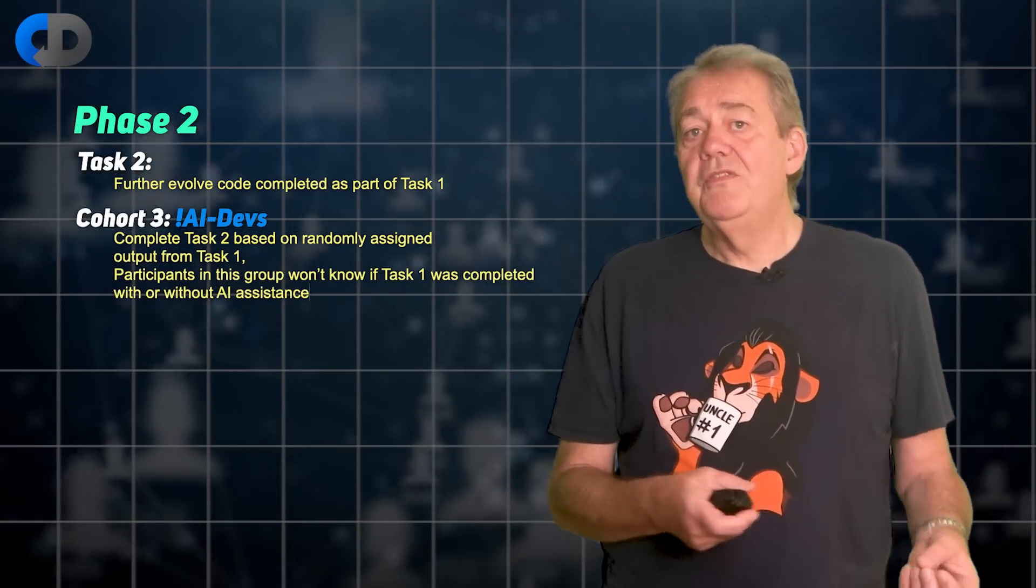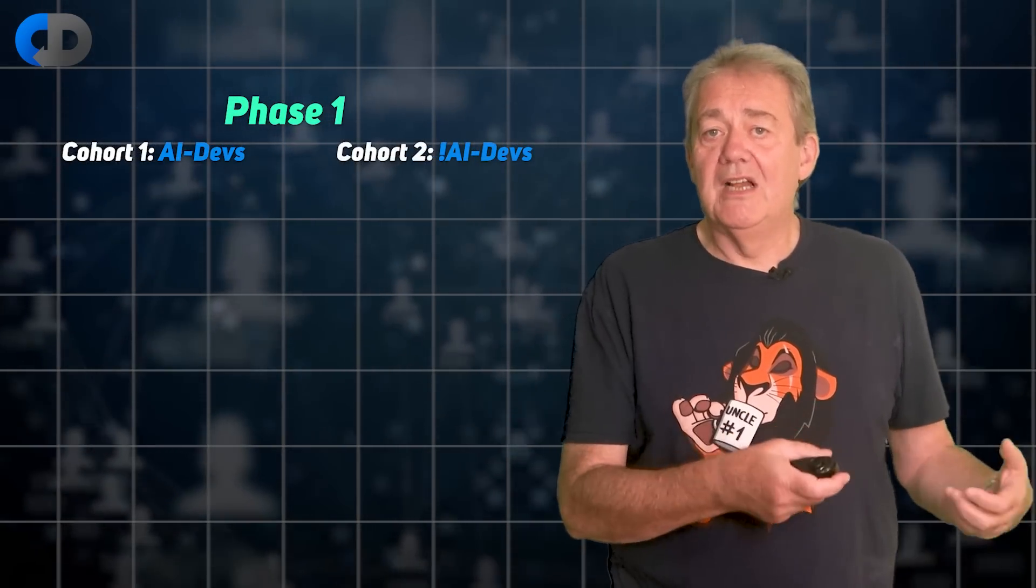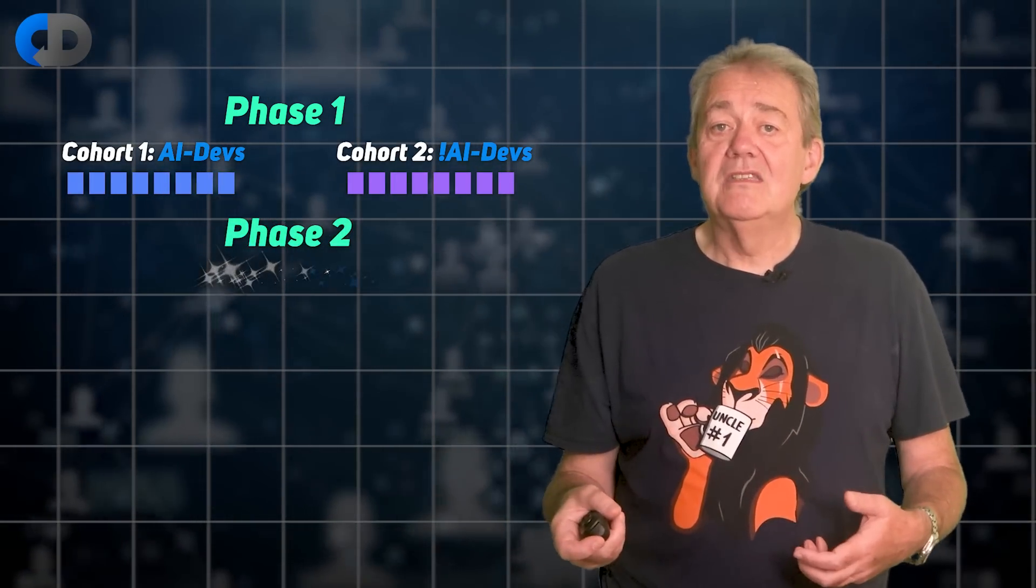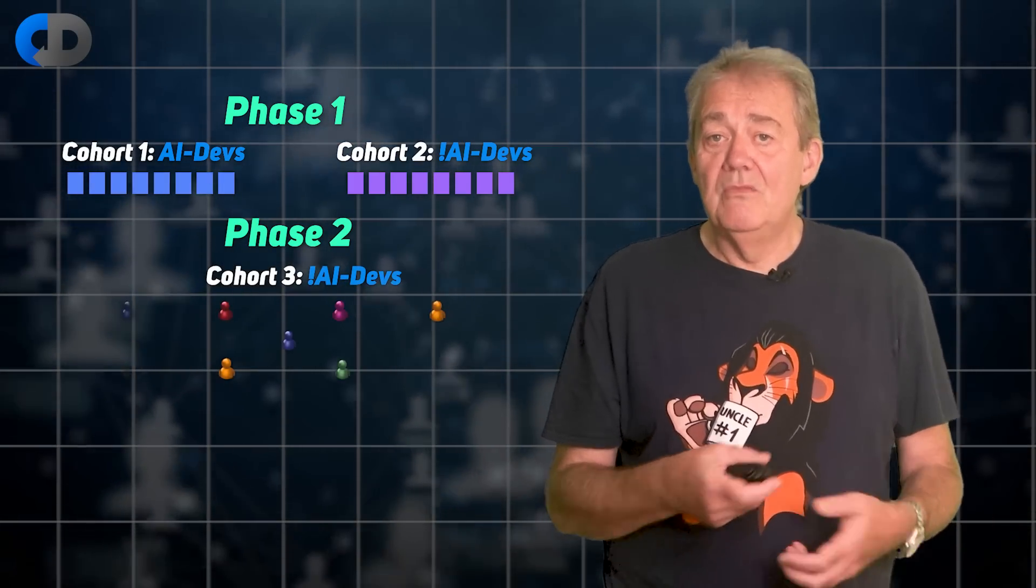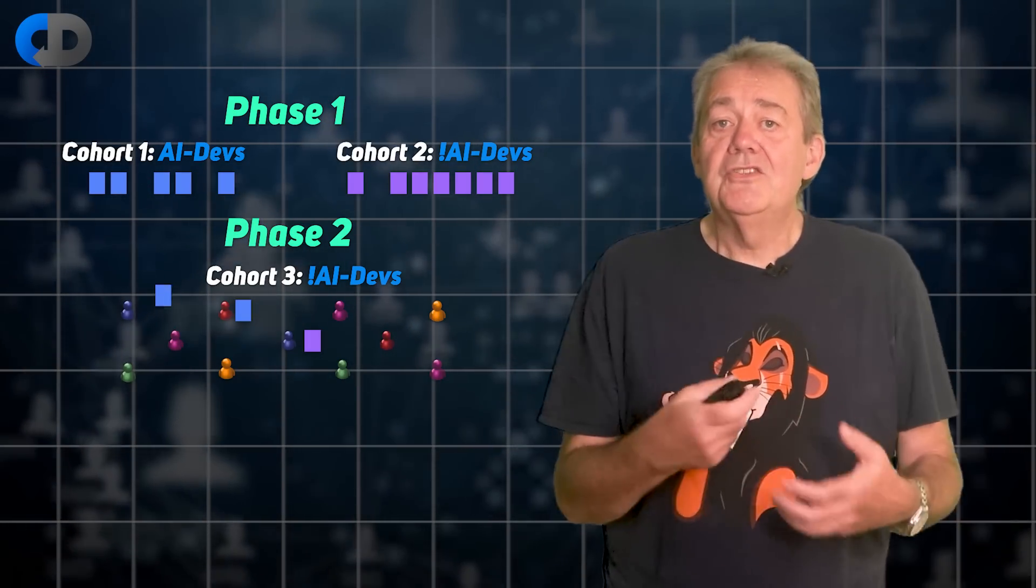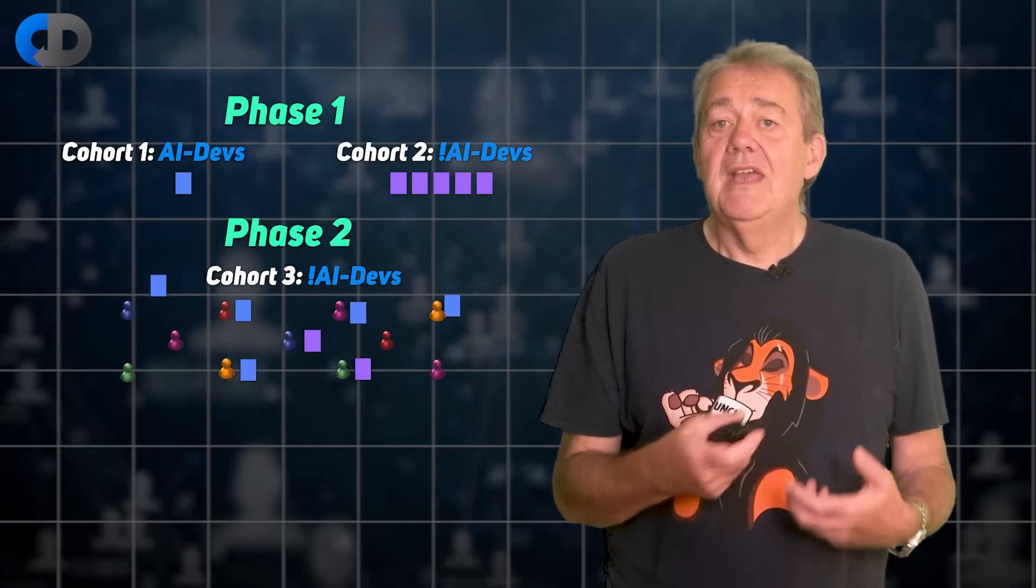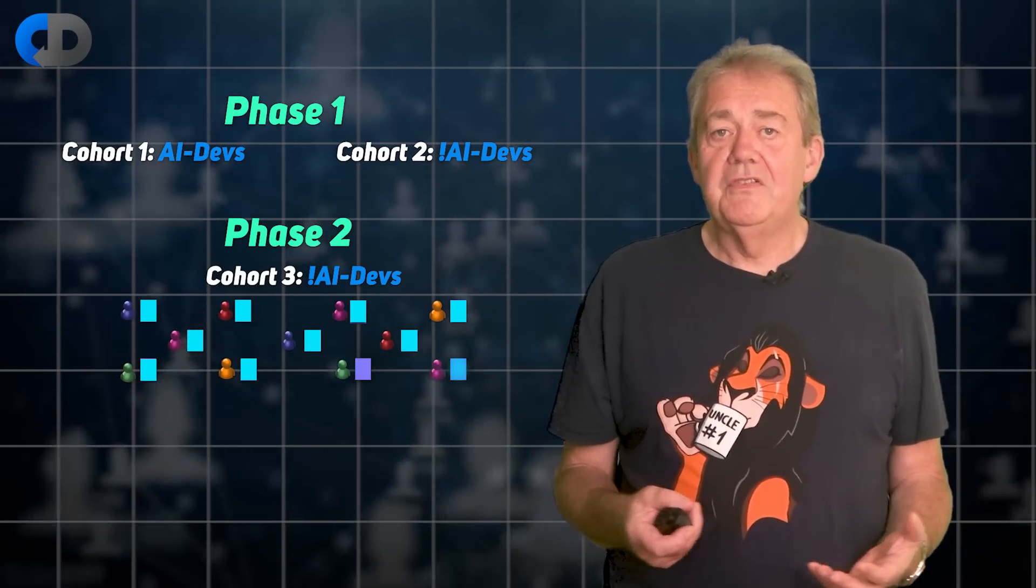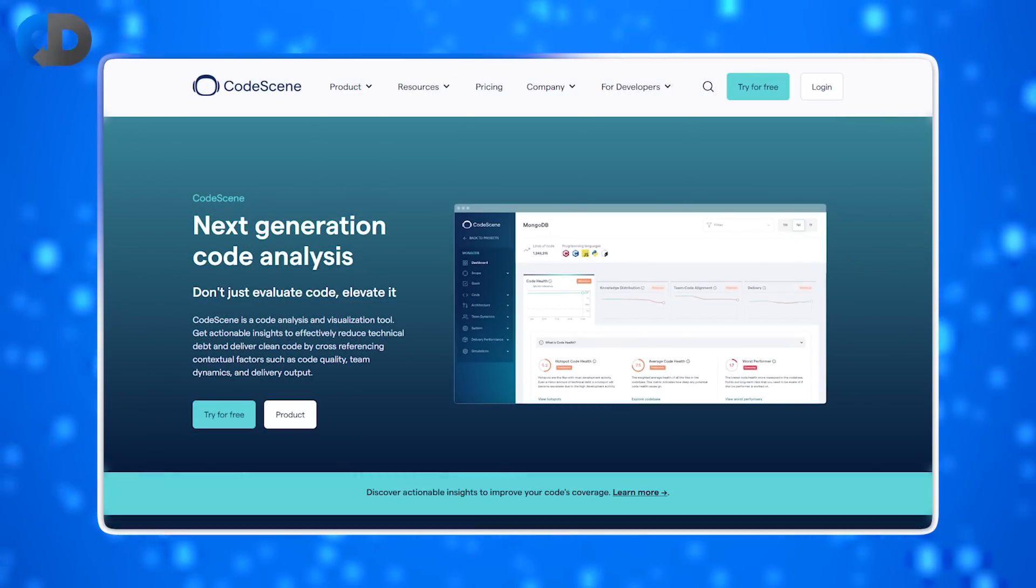In phase two of this study, we will evaluate the maintainability of the output from each of the groups in phase one. People in the phase two group will take the output of the coding challenge from phase one, not knowing if the output was generated with or without AI assistants. And then they will be asked to complete some new tasks to modify this code. The study will determine which is easier to modify, the AI-assisted code or the not AI-assisted code. The code will be evaluated based on several different metrics, including code scenes, very well-regarded measures of code health, time to complete the task and the perceived productivity of the people working on it based on Nicole Forsgren's space framework.